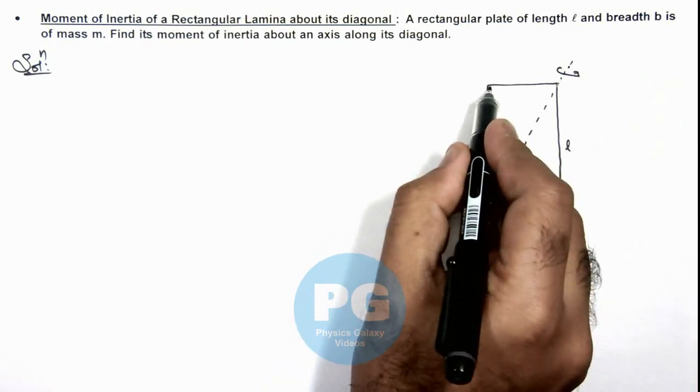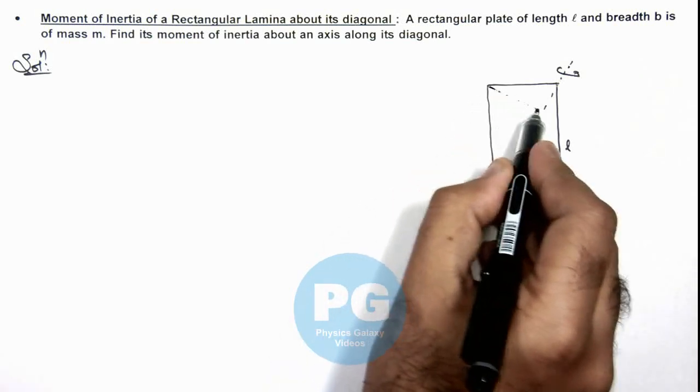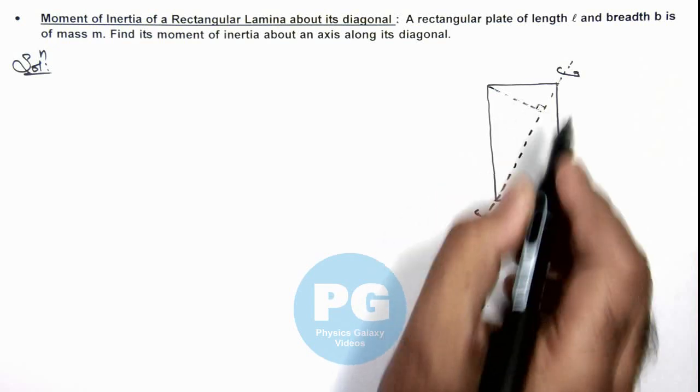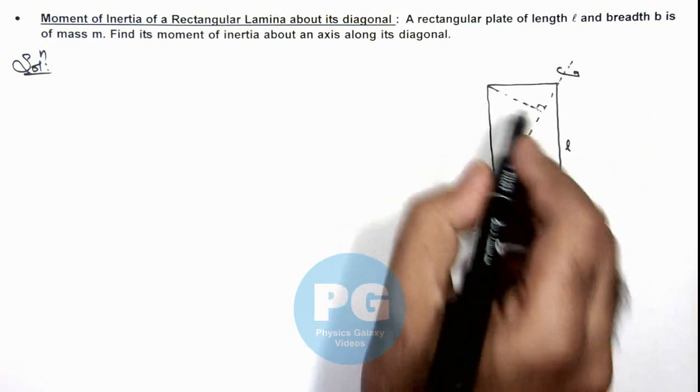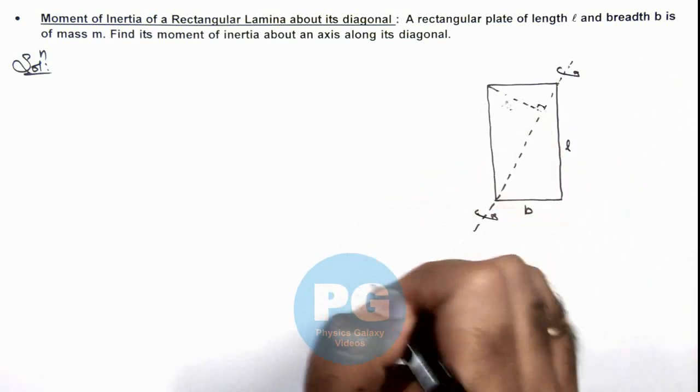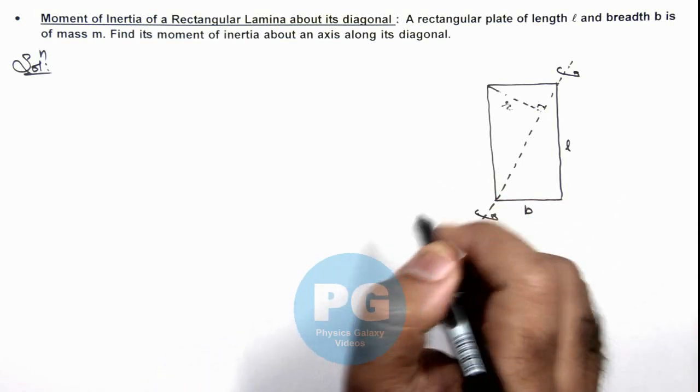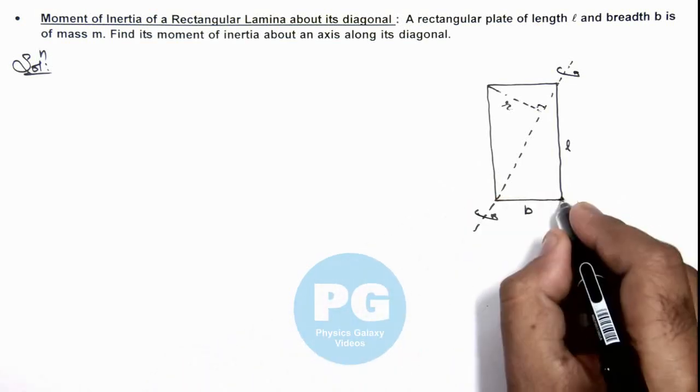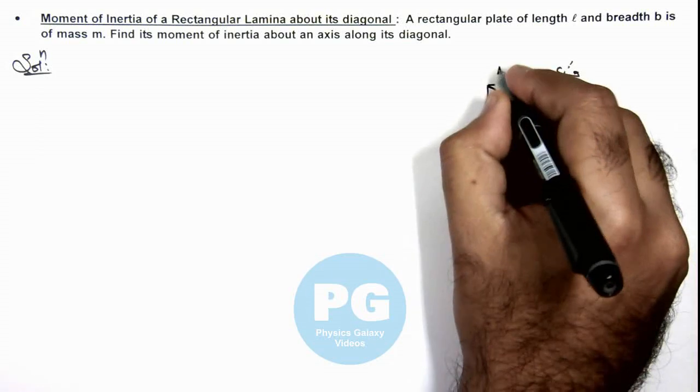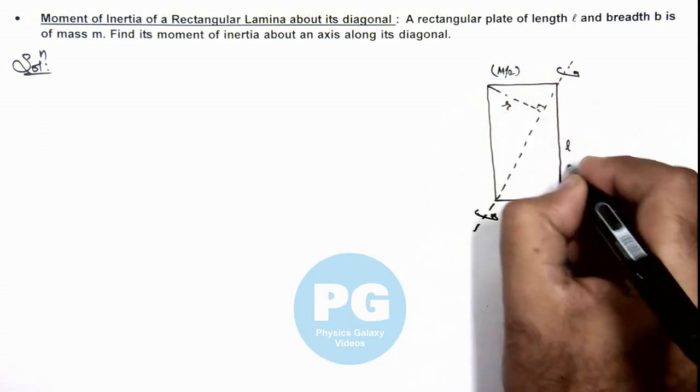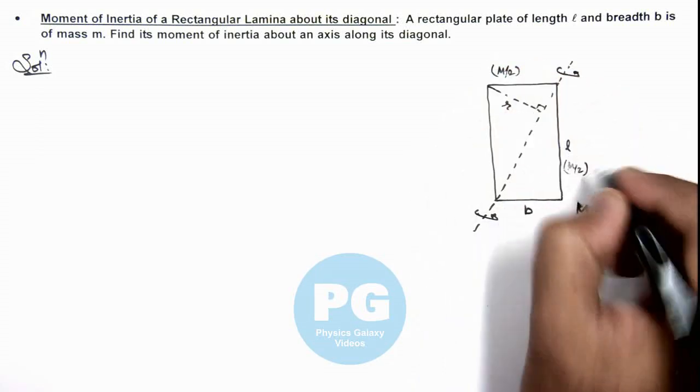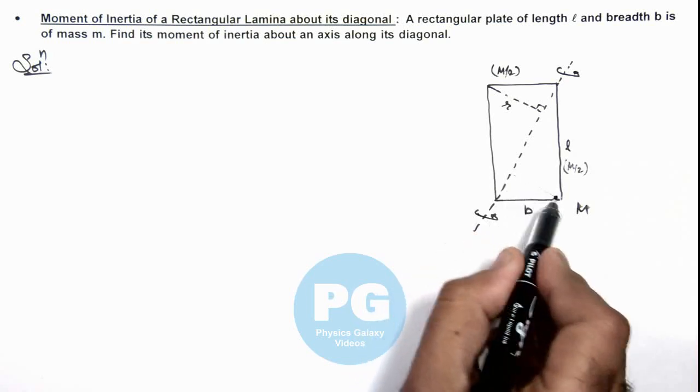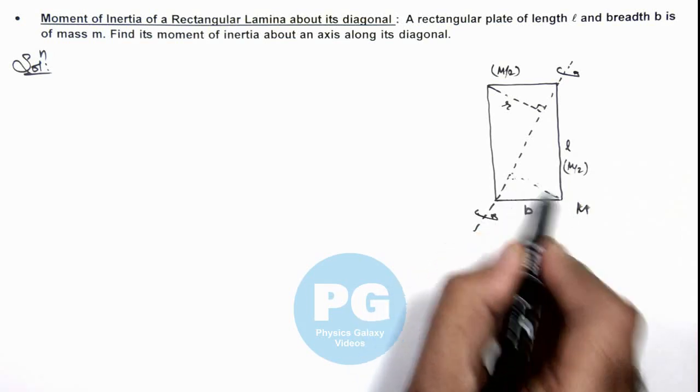And if we draw a perpendicular from one vertex onto the axis of rotation and say this distance is r, and mass of this plate is m, then both of the triangular plates will be having masses m by 2 and m by 2, and identically both of these plates will be having same moment of inertia.